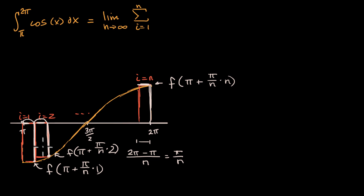if we're talking about the i-th rectangle, remember, we're going to sum them all up. What's their height? Well, the height is going to be, in this case, it's going to be cosine of π,